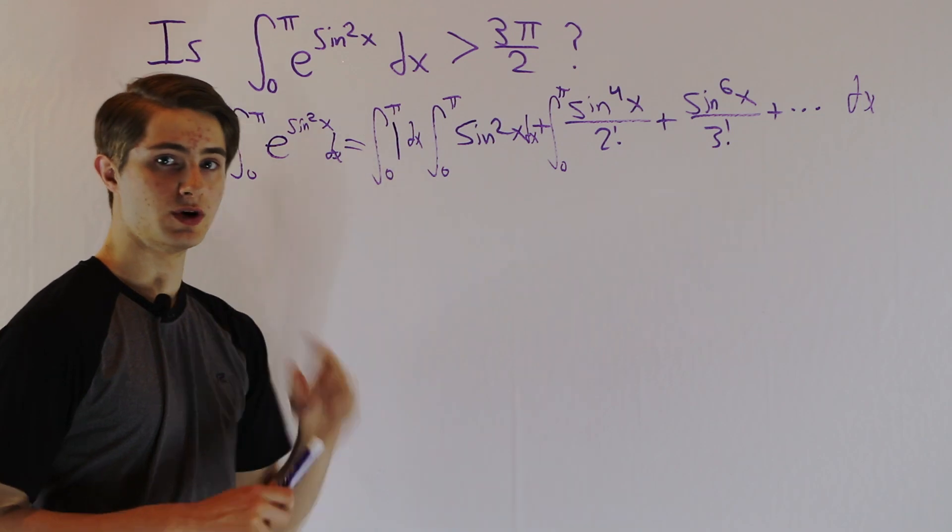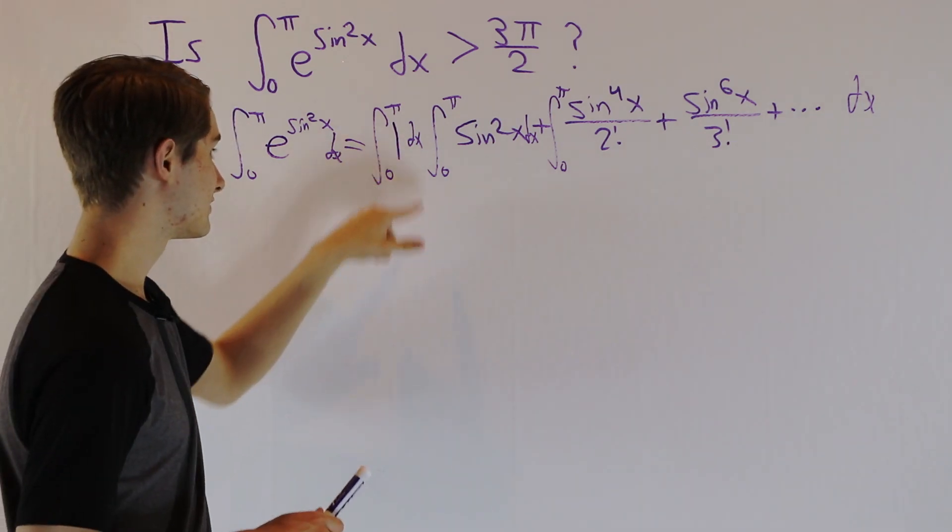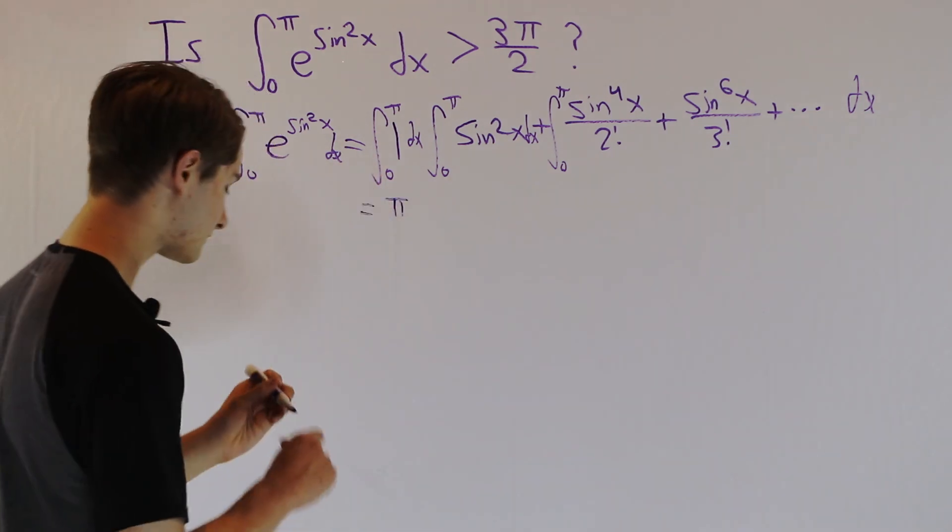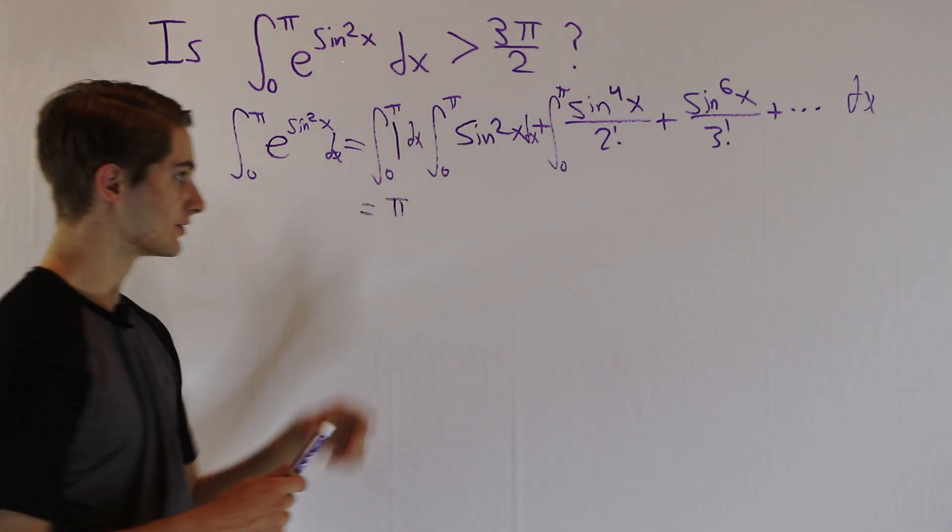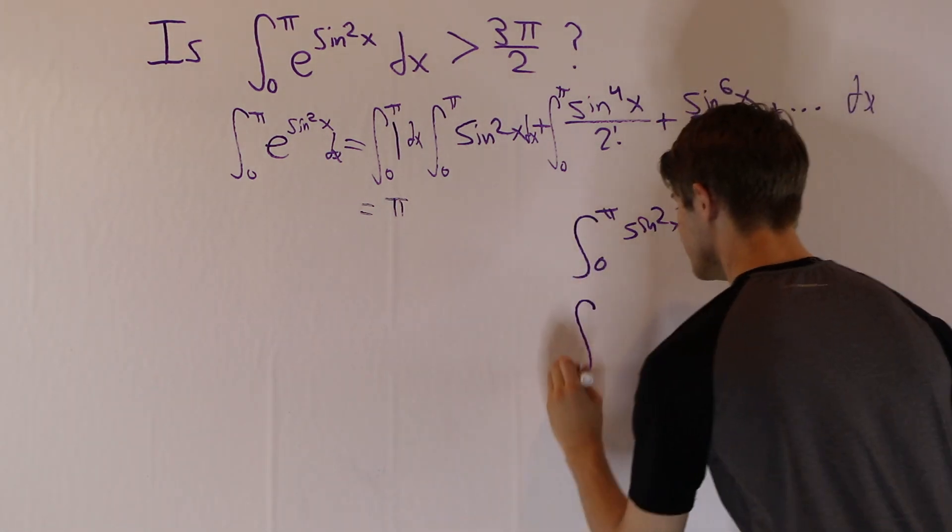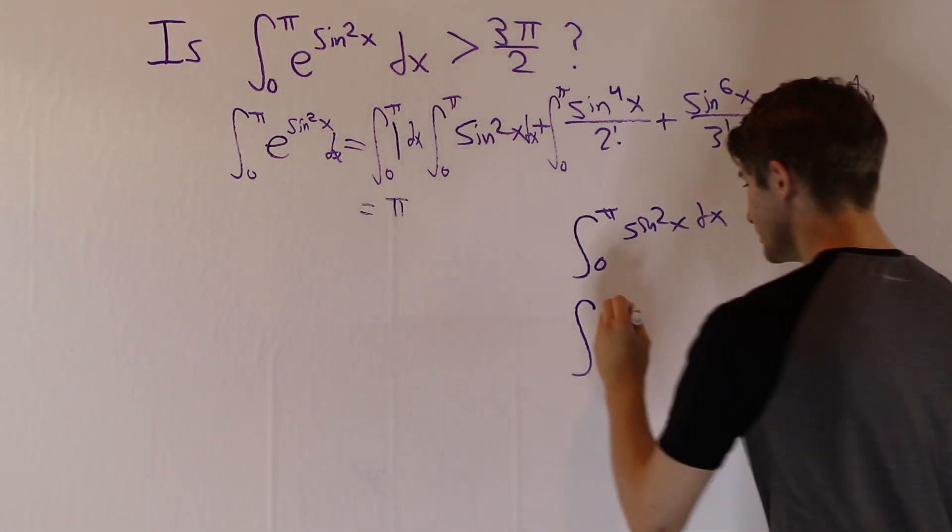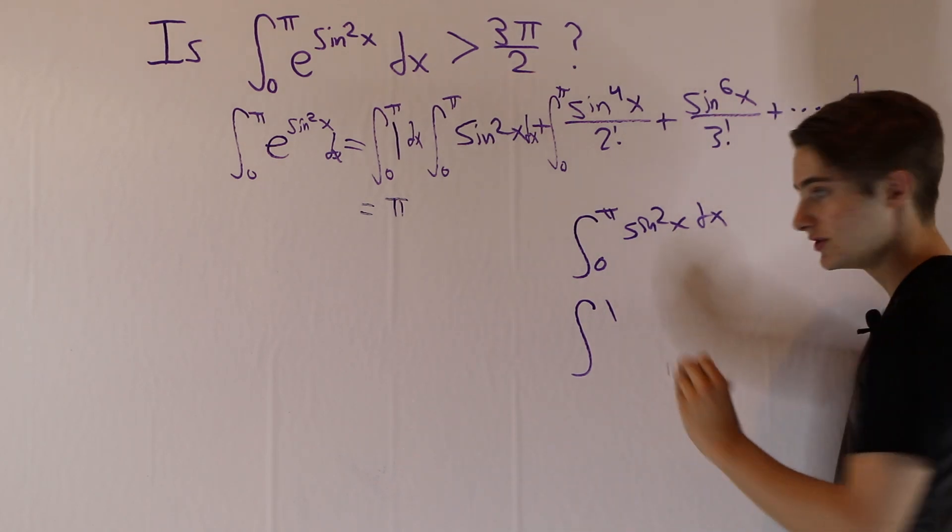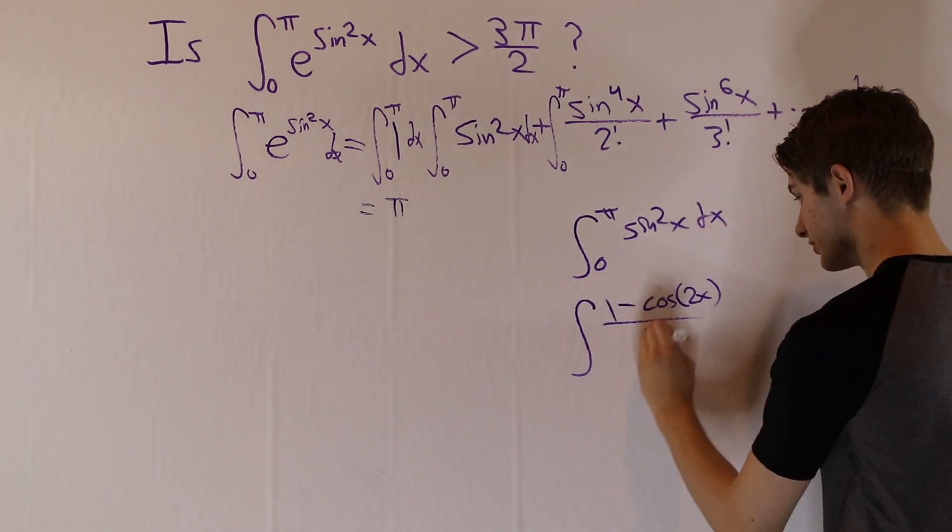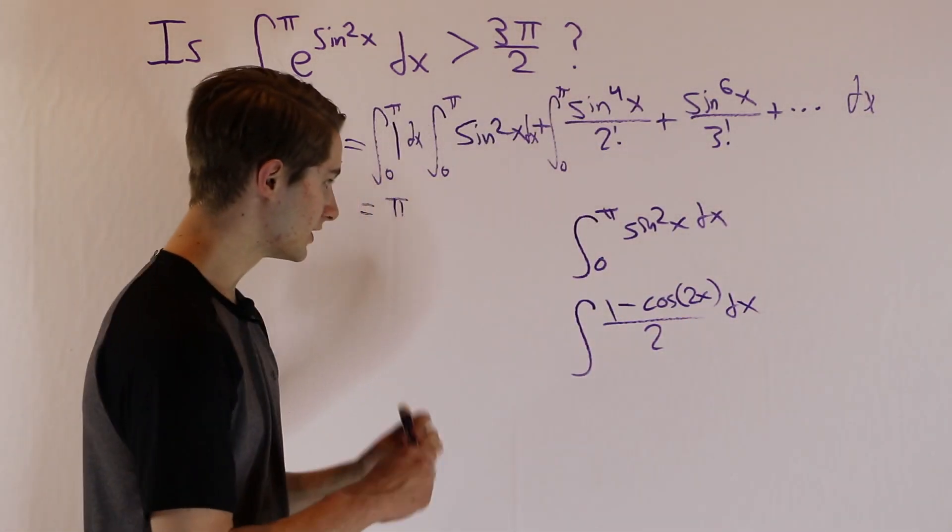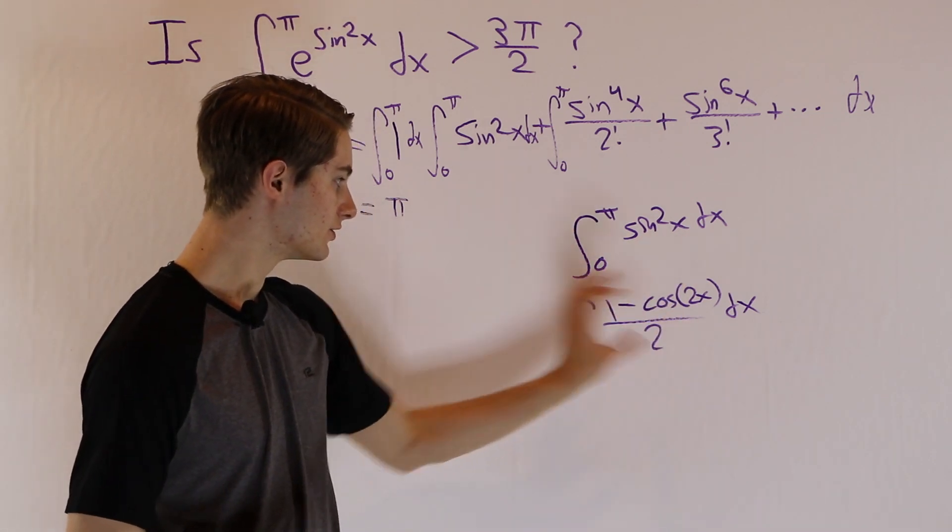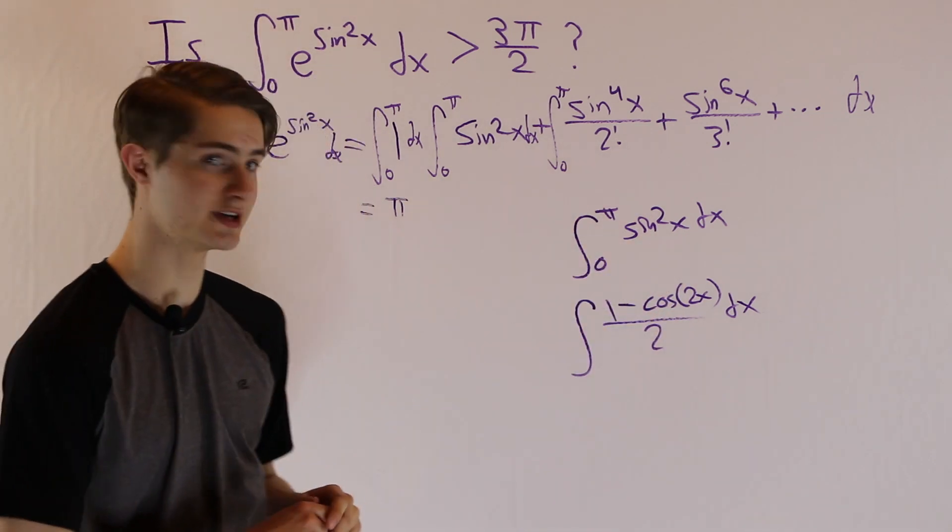Well for the integral of 1, that's fairly simple. We're going to get x, and x evaluated at π and 0 is just going to give us π. If we look at the second integral off to the side here, in order to do this, we can reduce the power of sine squared using the formula sine squared x equals 1 minus cosine 2x over 2. And this formula, if you write out the double angle formula for the cosine, simplify everything, you'll get back to sine squared.